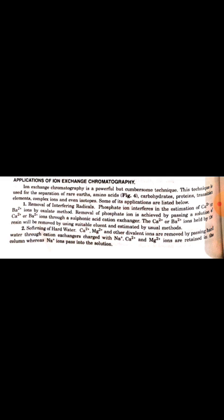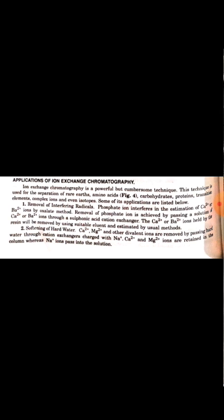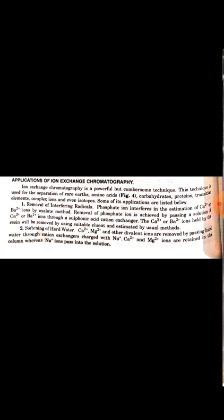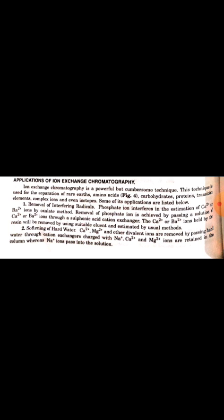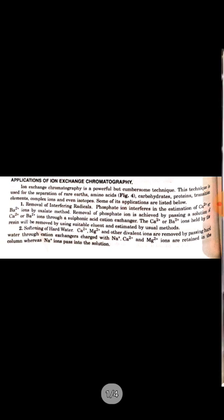Second is softening of hot water. Calcium and magnesium and other divalent ions are removed by passing hard water through cation exchangers charged with sodium ions. Calcium and magnesium ions are retained in the column whereas sodium ions pass into the solution.